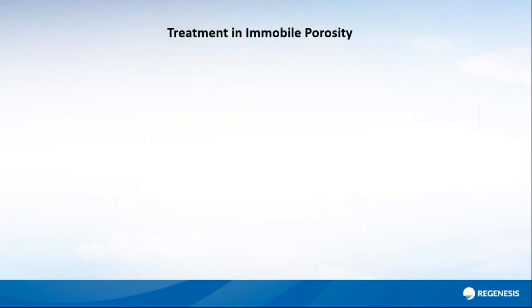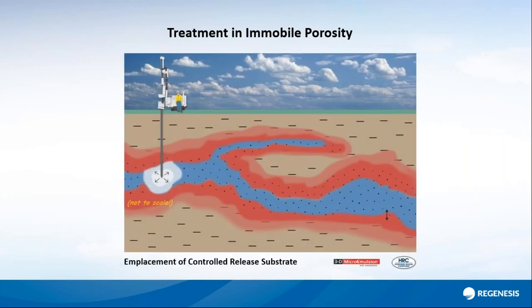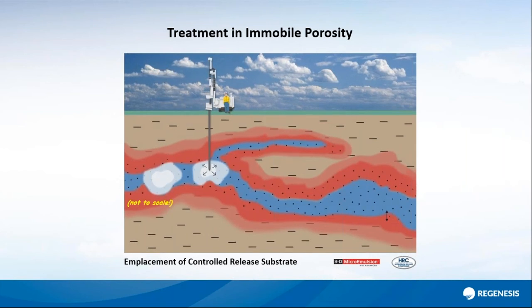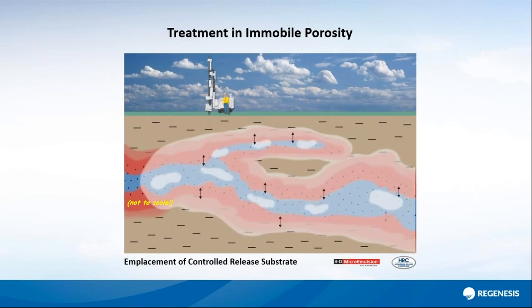What I'll be going through today is a way of treating contamination in both permeable and impermeable zones through the injection of substrates that cause enhanced reductive dechlorination. They diffuse active ingredients into the immobile porosity, or treat within the permeable zone and remain there, so that when back diffusion occurs you're dealing with that contamination as it comes back to you.